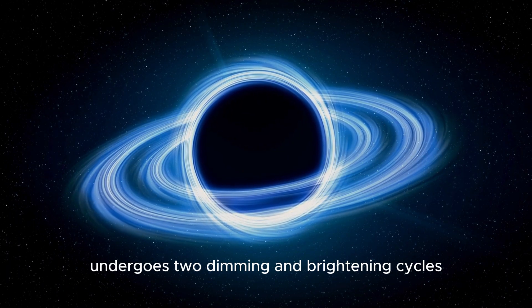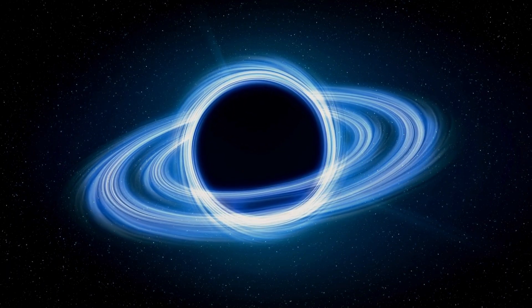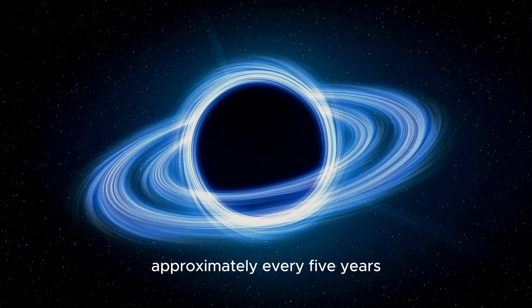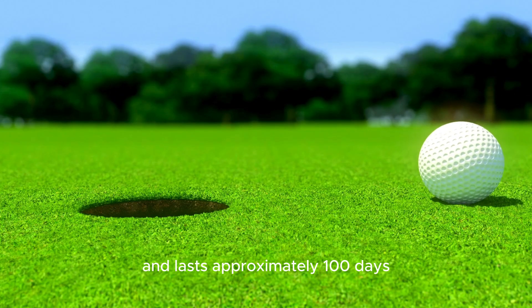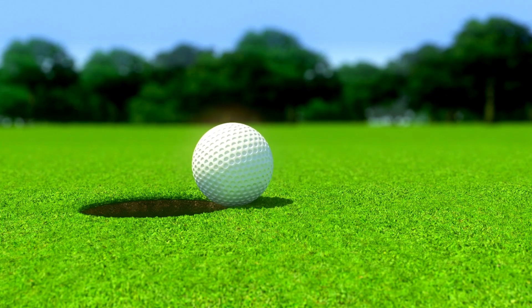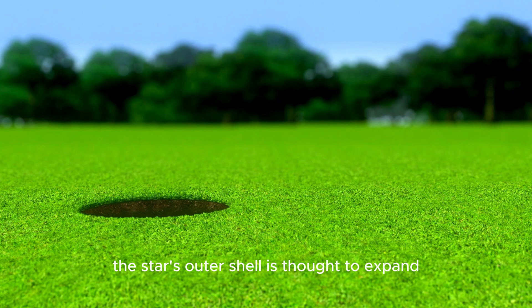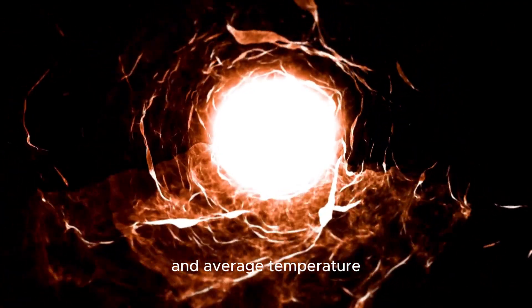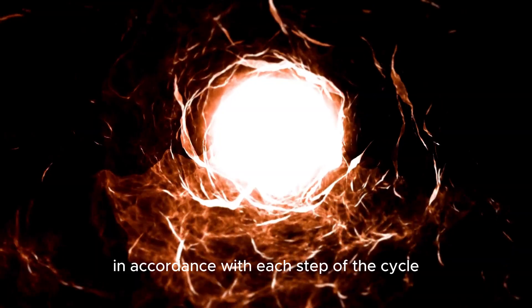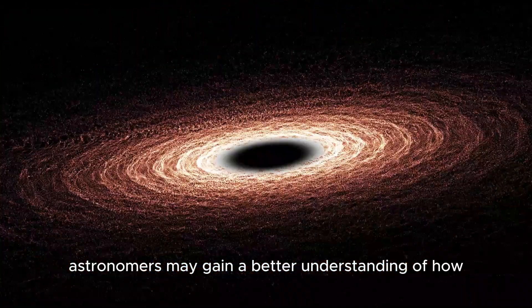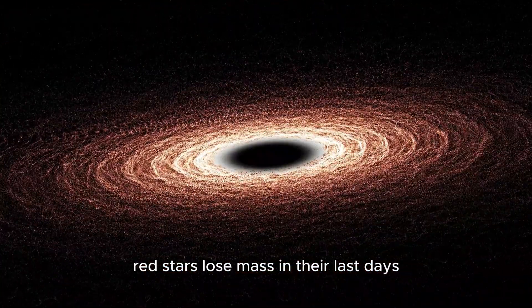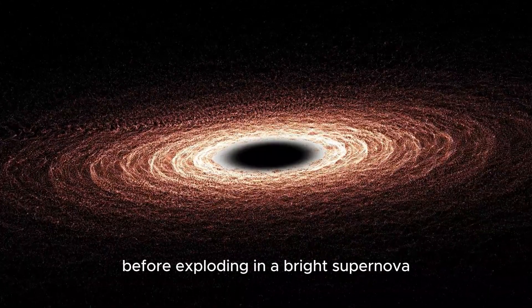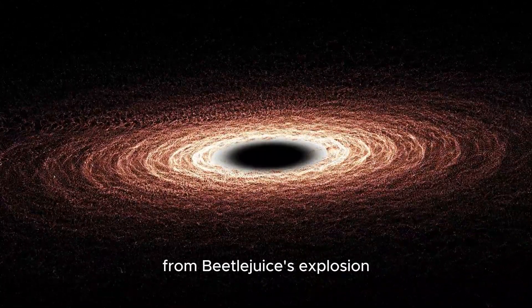Betelgeuse undergoes two dimming and brightening cycles. The second occurs approximately every 5 years and lasts about 100 days. The star's outer shell is thought to expand and contract during this cycle, changing the star's circumference and average temperature. Astronomers may gain a better understanding of how red stars lose mass before exploding in a bright supernova from Betelgeuse's explosion.